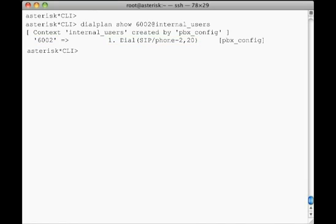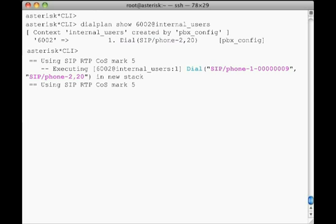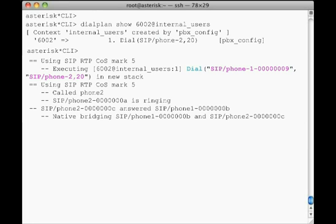Now we'll dial 6002 from our phone. As we initiate our call, we see that each step along the way Asterisk prints a brief message to the CLI denoted by two dashes. For the first step in the sequence, we see Asterisk is executing the Dial application. And displayed in parentheses are the dialing channel and the device that it is ringing. Take a look here at the information in brackets. This is the context, extension, and priority that is invoking the dial application. The first portion, 6002, is the extension that was dialed, at the internal_users context, followed by colon 1, which is the priority number.